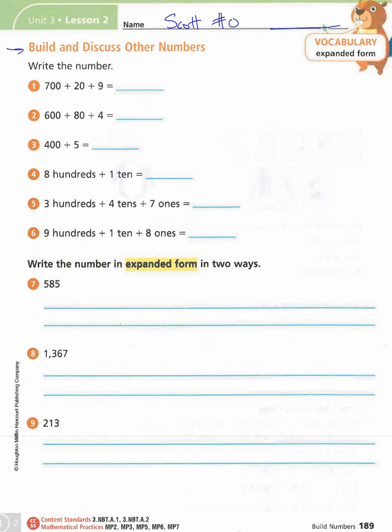In this lesson we are going to build and discuss other numbers. You are going to need what Math Expressions calls the secret code cards, which are on pages 189A through 189D. You'll need to have those all cut out and ready to work with, so pause the video if needed to get those ready.